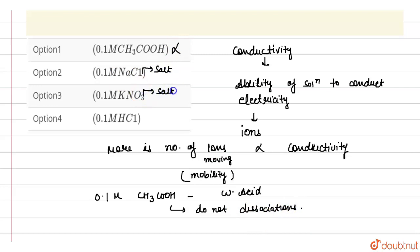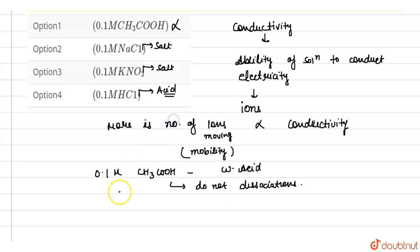KNO3 is also a salt and HCl is an acid. And HCl is not only an acid, HCl is a strong acid.